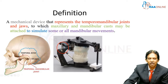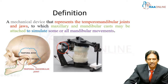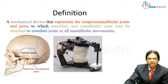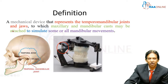The definition says it 'represents the temporomandibular joint and jaws.' In the human body, the temporomandibular joint has a glenoid fossa, condyle, and articular disc inside. The entire joint compartment moves antero-posteriorly and mediolaterally. In the articulator, we also have a temporomandibular joint. Whatever movements are possible in the human temporomandibular joint, the same movements are possible in the articulator as well.